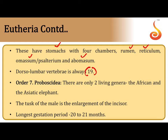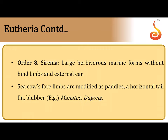Order Proboscidea includes elephants — both African and Asiatic. The tusk of the elephant, which contains ivory, is nothing but enlarged incisor teeth. Elephants are known to have the longest gestation periods.